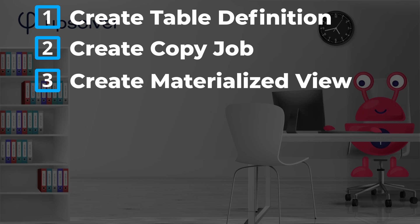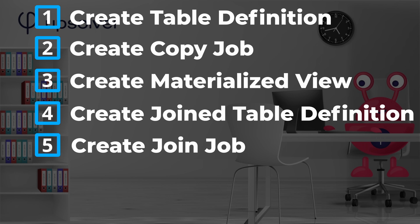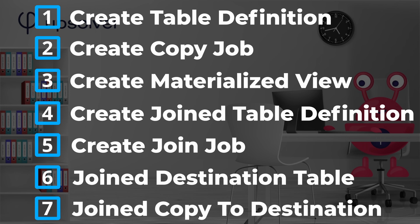Third, we create a materialized view that contains the last updated row from the second source table. Upsolver will join the first table with this materialized view. Fourth, we need to create another table definition for the resulting join data. Fifth, we need to create the job that does the join — this job will define how the tables are joined together. Sixth, we need to create a table definition in our destination system — in this video, we'll show how to do this in Snowflake. Finally, we must create a job that joins and copies the data from Upsolver to our destination system. Each job represents a step in the pipeline. Upsolver automatically synchronizes the execution of jobs to run in the same window of data. If one job stops receiving data, the ones that depend on it will pause until data becomes available. This architecture means hiccups in data availability don't result in corruption downstream.